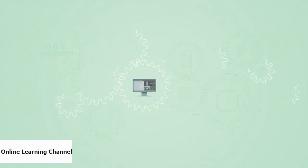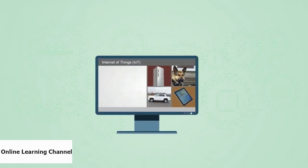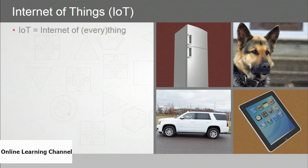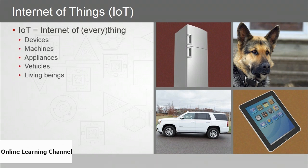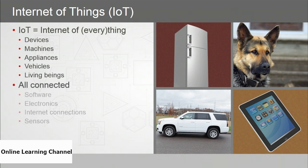IoT is the Internet of Things — but it's becoming the Internet of Everything. The devices people use every day — machines, appliances, vehicles, and even living beings — are all connected through the Internet via software, electronics, internet connections, and sensors. For the most part it's transparent; we don't really know what's connected out there. We know there are security cameras on the streets and devices that sit and listen in our homes, and with each passing day, the scope of connectivity is growing.